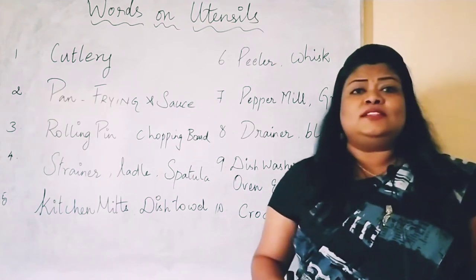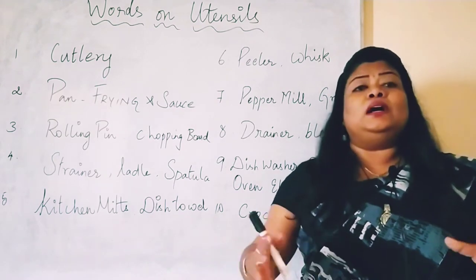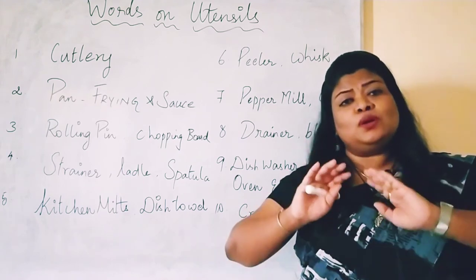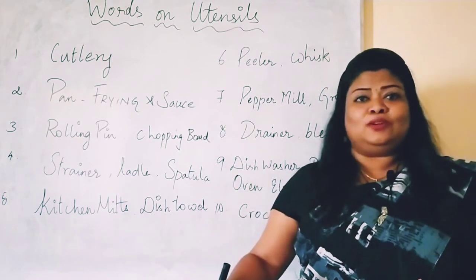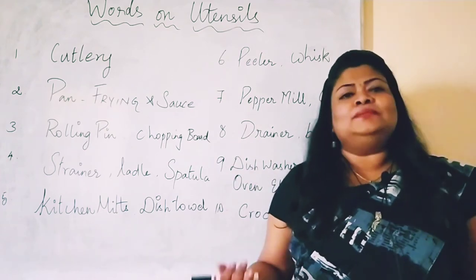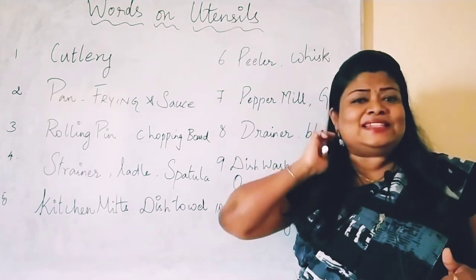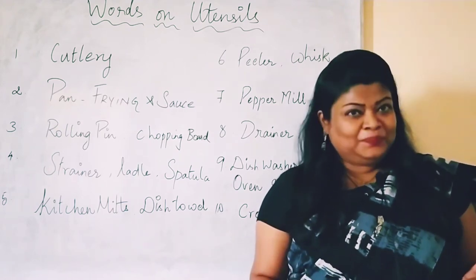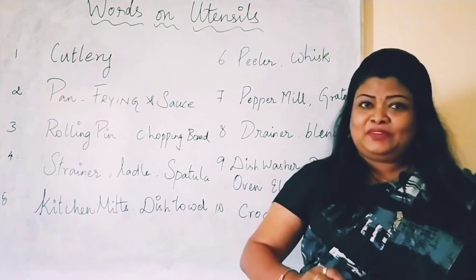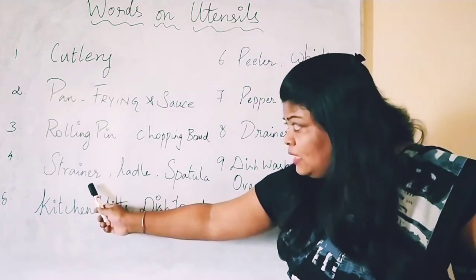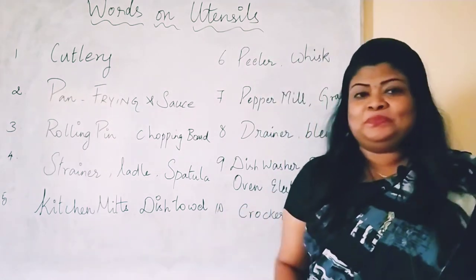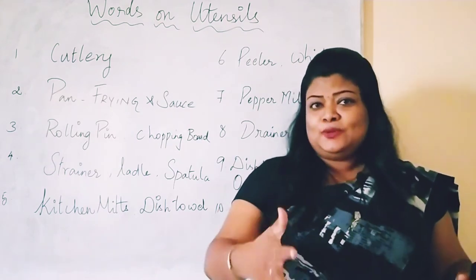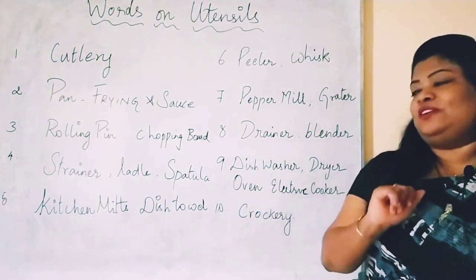Dishwasher and dryer. You know what a dishwasher is — many people nowadays have it at home. It is an electronic gadget to wash dishes, and there is a dryer unit as well: dishwasher and dish dryer. We also use the grill — for barbecue. And what else? We have the oven. People say 'oven' — please correct this, it is oven. Kitchen mitts are what you use to avoid the heat when handling hot items from the oven.